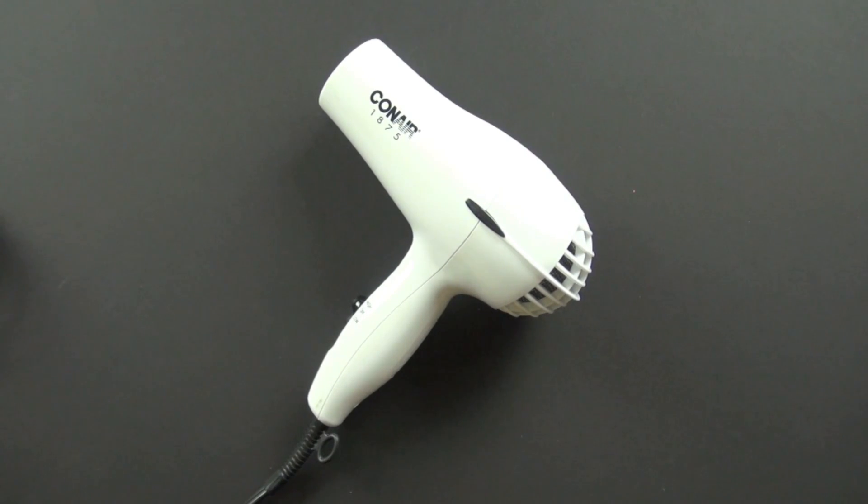All right, today we're going to take a look at the Conair 1875 hair dryer. We're going to look at the different systems and functions inside of it, how it was made, and how it works.